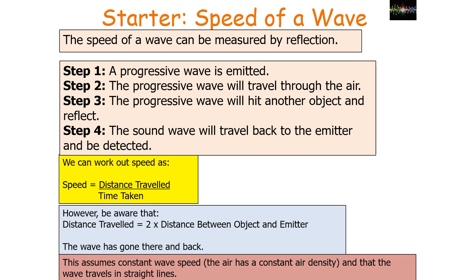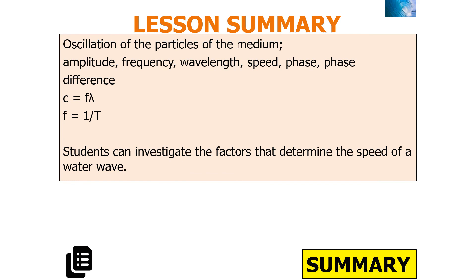So what have we learned? The speed of a wave can be measured by reflection: emit a progressive wave, it travels through the air, hits an object and reflects, then travels back to the emitter and is detected. Speed equals distance travelled over time taken, where the distance is two times the distance between the object and the emitter. This method assumes constant wave speed and that the waves travel in a straight line.